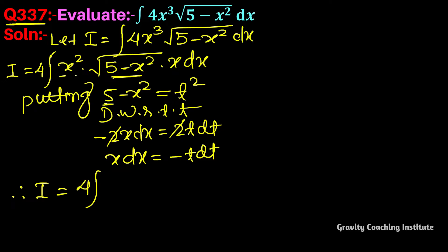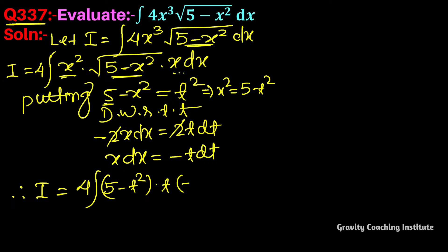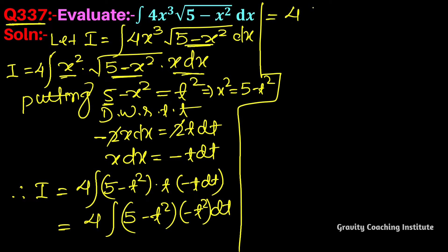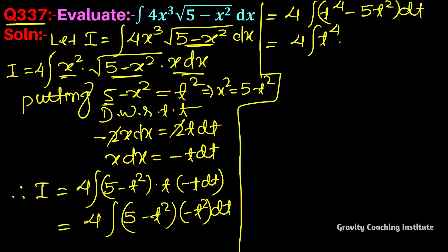After substitution, x² equals 5 minus t², and x dx equals minus t dt. So I equals 4 into integration of (5 minus t²) into root t² into minus t dt, which equals 4 into integration of (5 minus t²) into minus t² dt. Expanding: 4 into integration of (t⁴ minus 5t²) dt, which equals 4 into integration of t⁴ dt minus 20 into integration of t² dt.